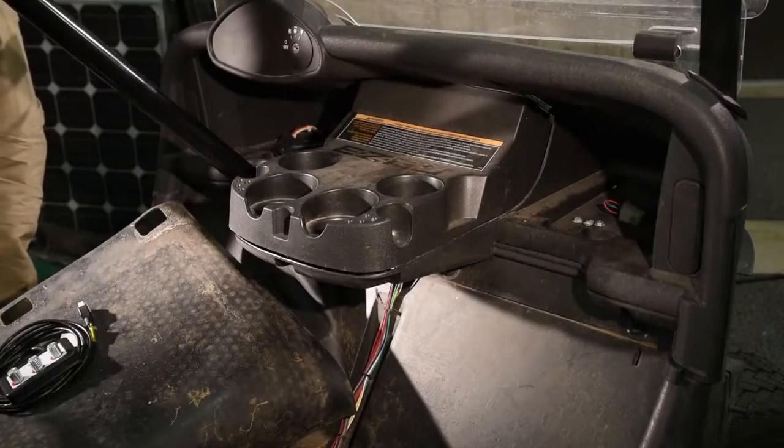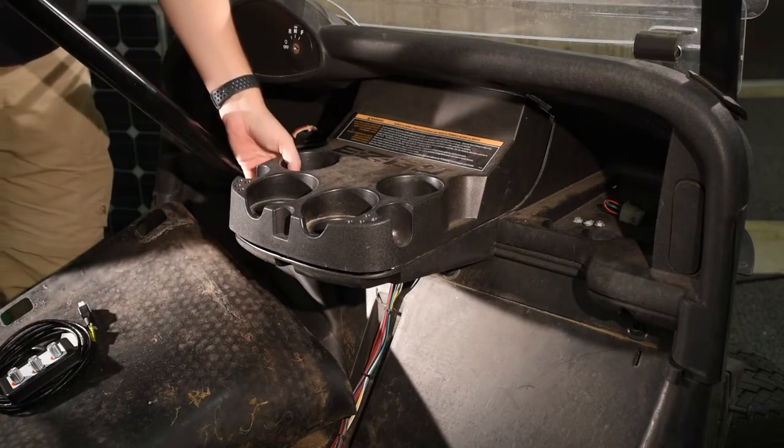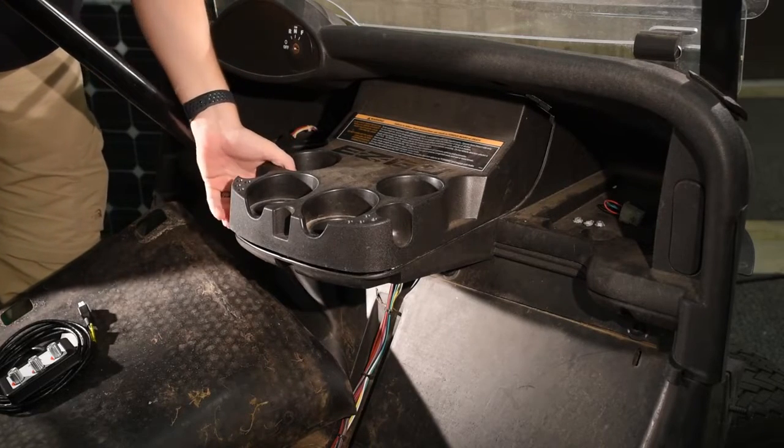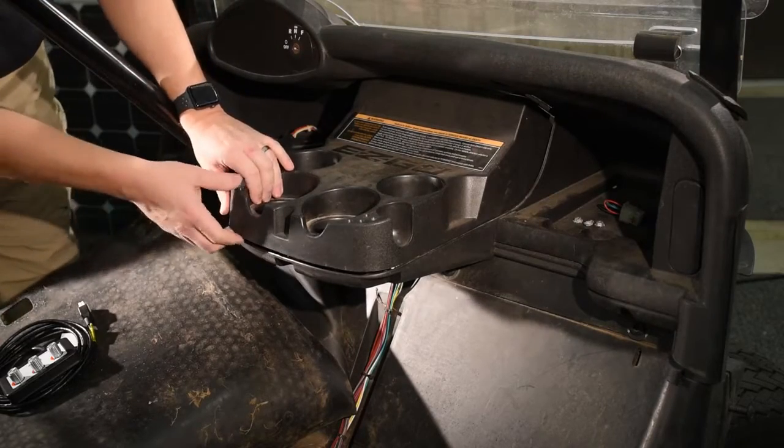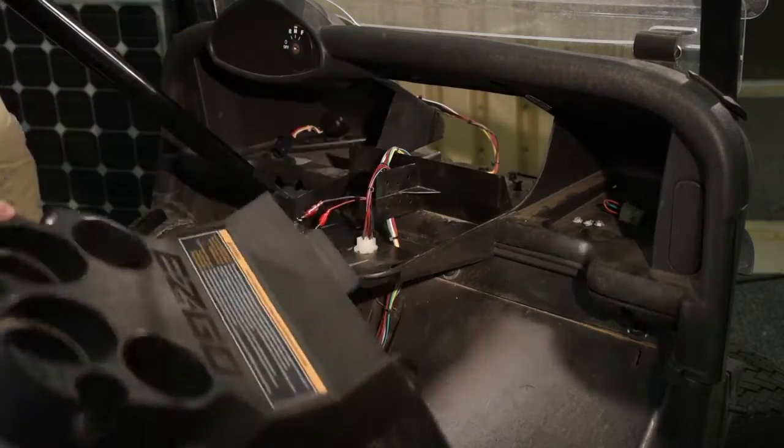To install the on-the-fly programmer, remove the cup holders from the EasyGo. There are three clip-on nuts underneath. When you loosen them up, you should be able to just pull this out.